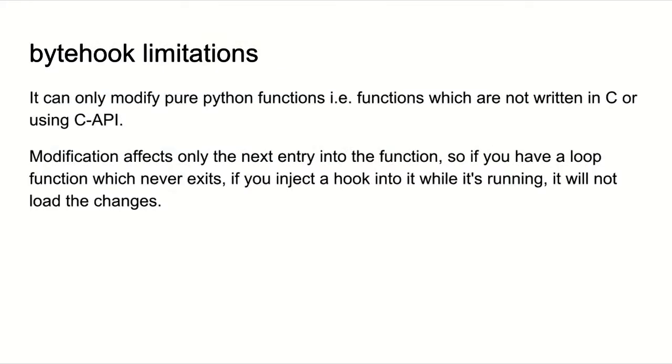The current limitations are: it can only modify pure Python functions, not functions written in C or using the C API. Also the modifications affect only the next entry to the function - so if you have a loop that never exits and you inject a hook while it's running, it won't load the changes. But if you're hooking into a function that the loop calls, that will work for the next time it enters. For now it supports CPython 2.7, and it hasn't been thoroughly tested in all situations.